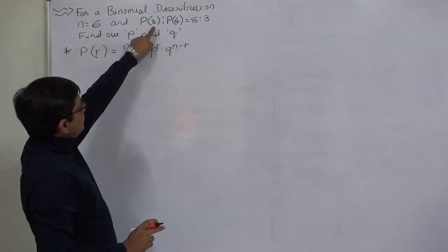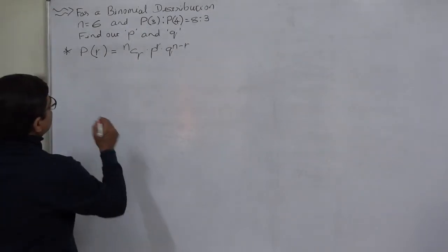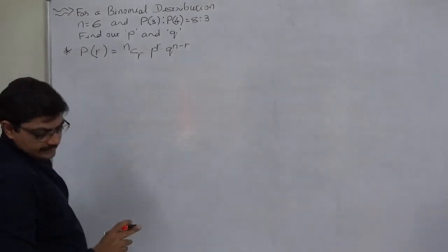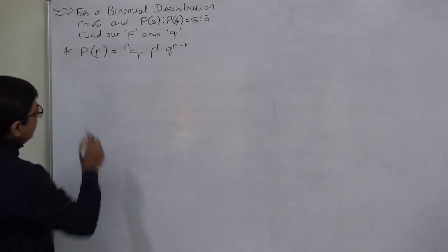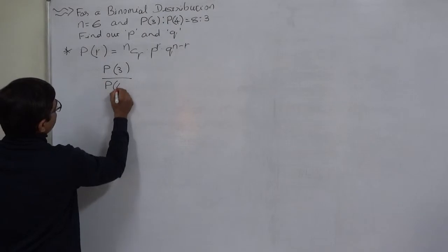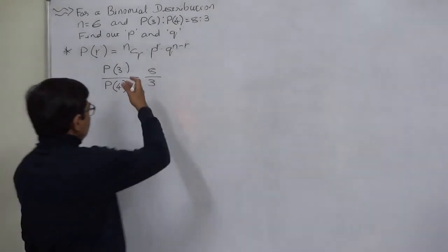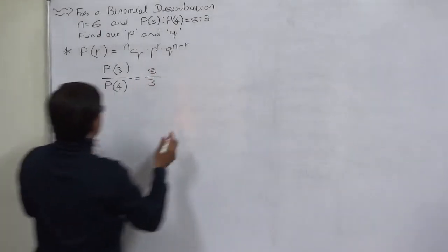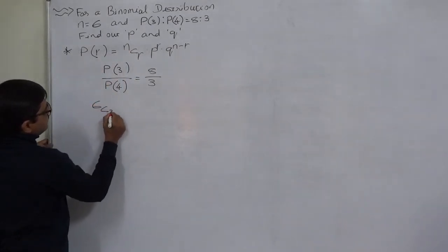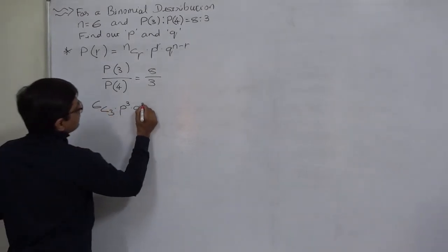Since P(3) to P(4) equals 8 to 3, we can write this as P(3) divided by P(4) equals 8 by 3. Substituting the data into the formula with n equals 6: the numerator is 6C3 into P raised to 3 into Q raised to 6 minus 3, which is also 3.